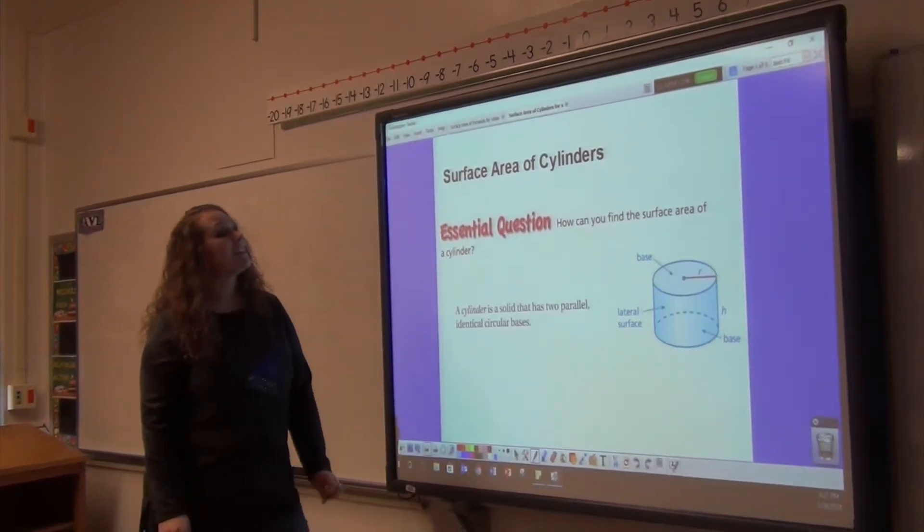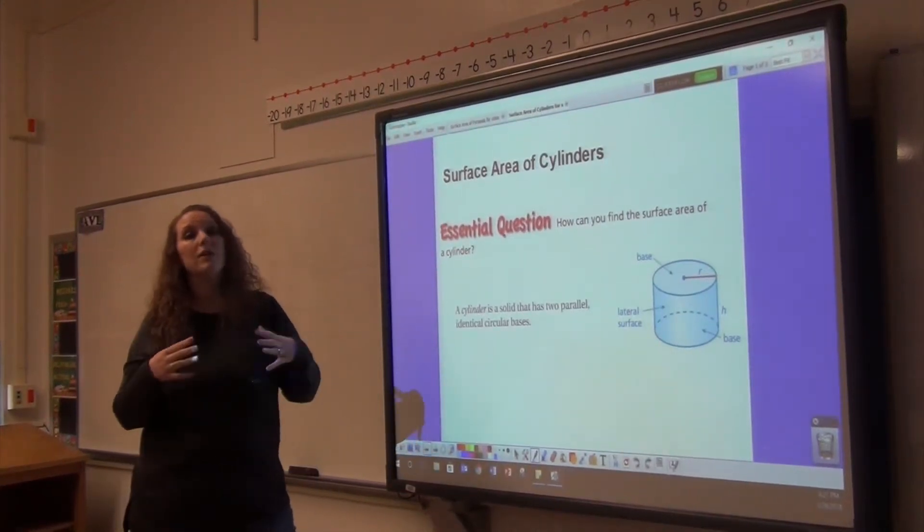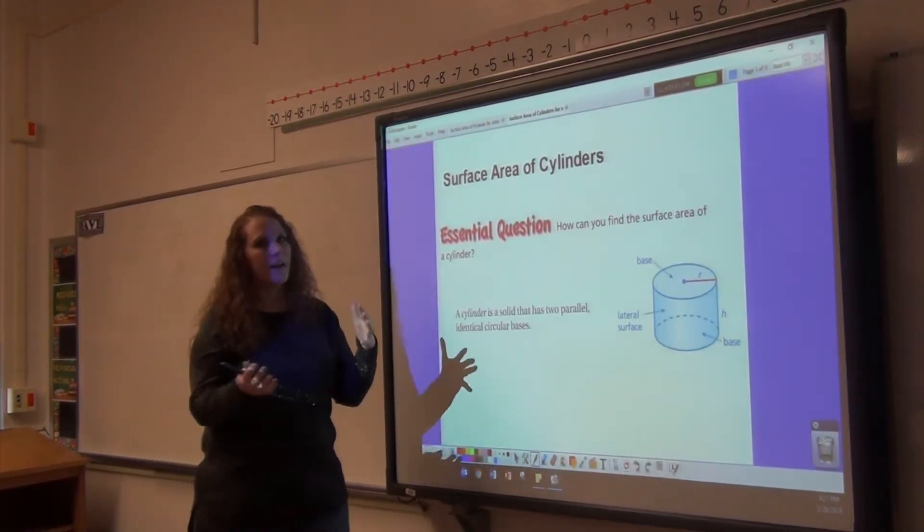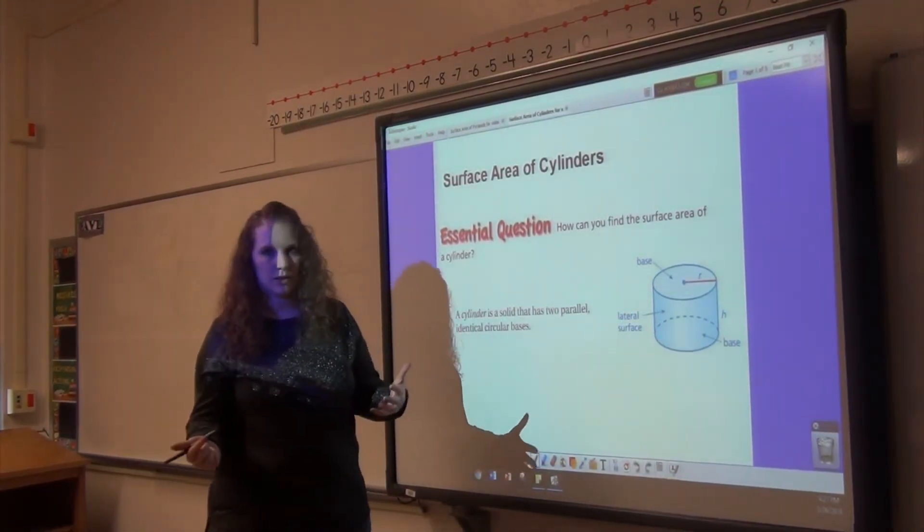Surface area of cylinders. You're finding the entire outside area and adding them all together, same as a rectangular prism.